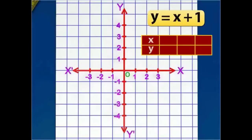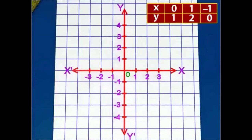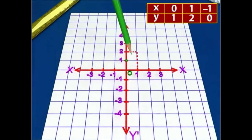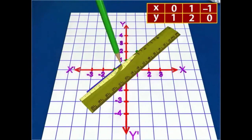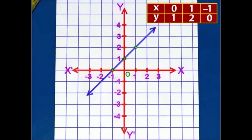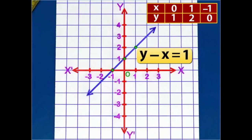Now substitute any three distinct values of x in the equation and find the corresponding values of y. Mark the three obtained points on the graph and join them. The line joining the three points is a straight line representing the equation y minus x equal to 1.